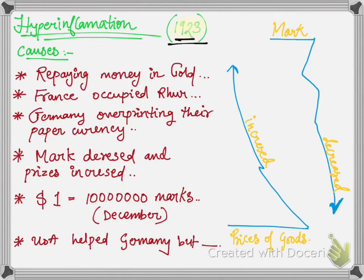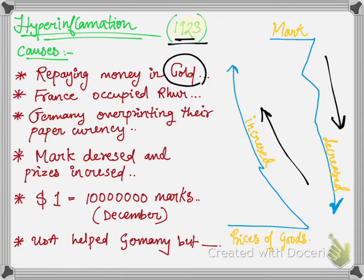In 1923, Germany faced hyperinflation — prices of goods increased very rapidly while the currency decreased very fast. The money spent for the war came from loans that had to be repaid in gold, but Germany had no gold left. France had occupied the Ruhr, the main industrial area, for its coal production.